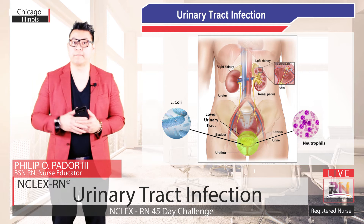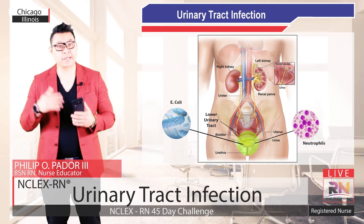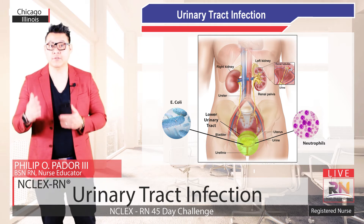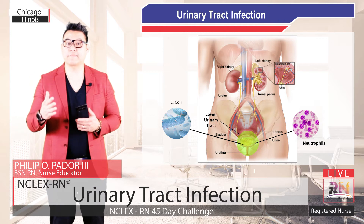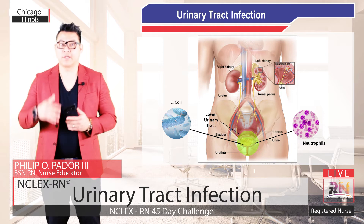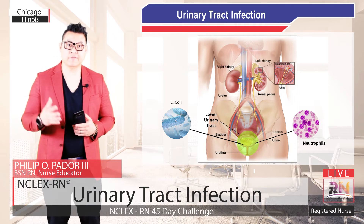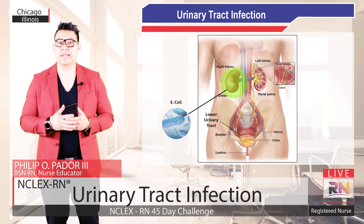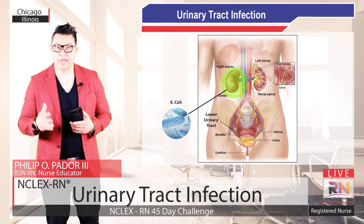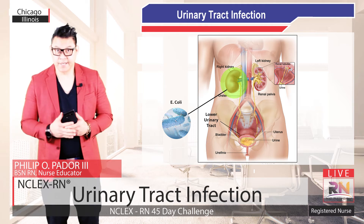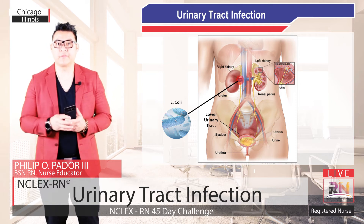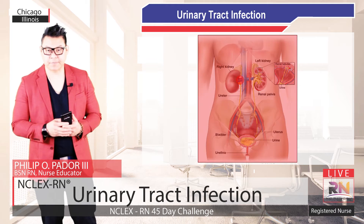The bacteria can form biofilms — groups of microorganisms that stick to each other and adhere to surfaces, allowing them to survive. If the urinary tract infection progresses and is left untreated, or if the patient is immunocompromised, the bacteria can ascend towards the kidneys and cause an upper urinary tract infection. If left untreated further, the bacteria can spread into the circulation via the renal veins, causing, in the worst case, septic shock.